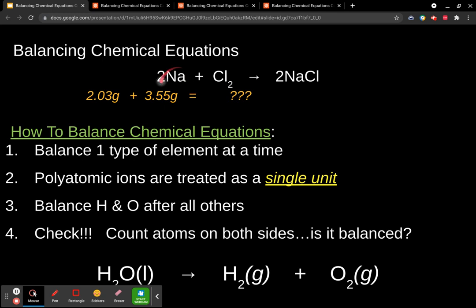In this case, you can see we have two sodium atoms here. We end up with two sodium atoms here. We start out with two chlorine atoms. We end up, because we got two of this whole molecule or this ionic compound, we end up with two chlorine atoms there.